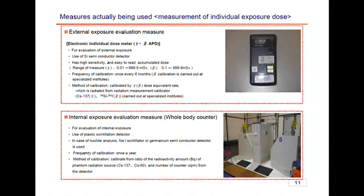Below is shown a measure to evaluate internal exposure. This is the so-called whole body counter. The photo shows the type that can conduct measurements from a seated position. Around it, plastic scintillation detectors are installed, and when you sit on it, it detects radiation from within your body and translates it into figures. The detectors are placed around your chest to your stomach, and it is calibrated by this phantom ray source.